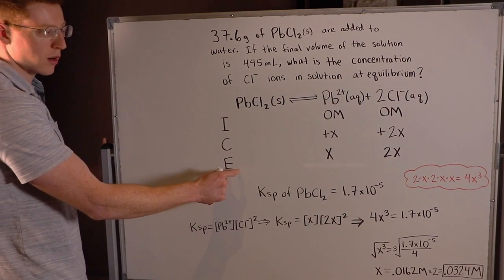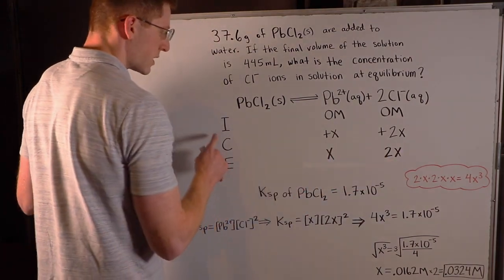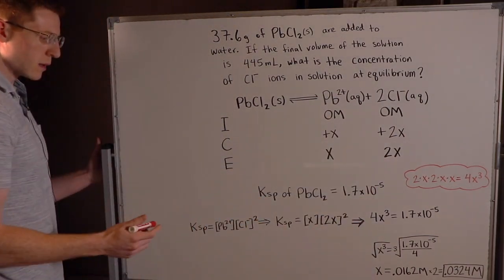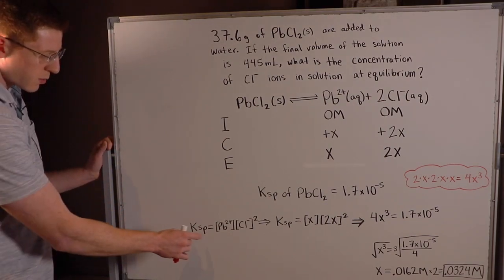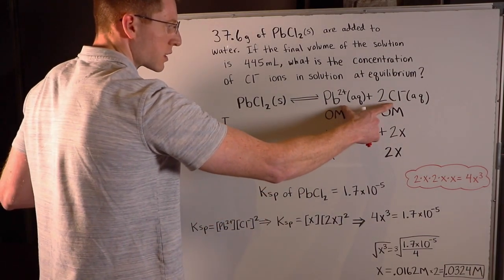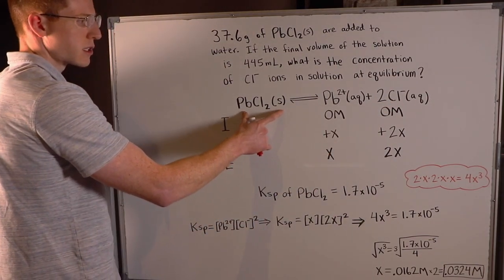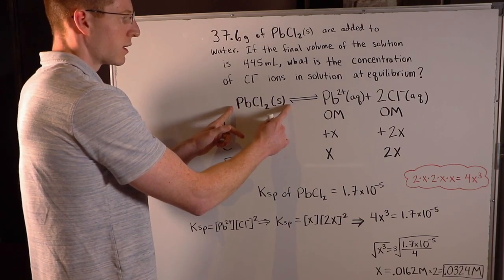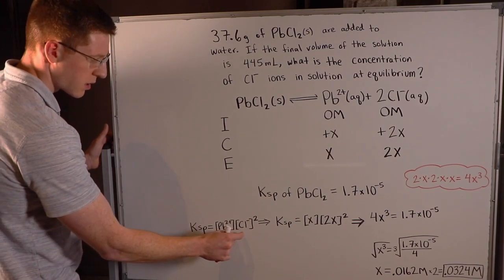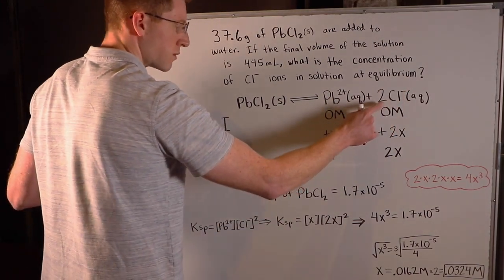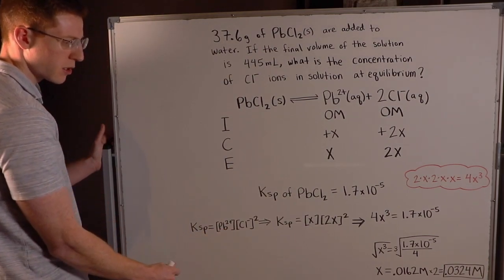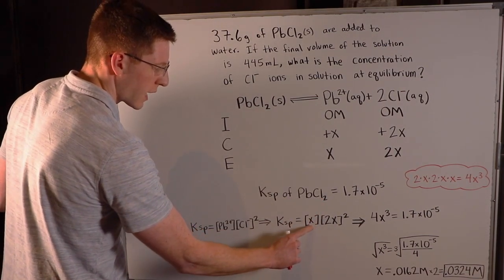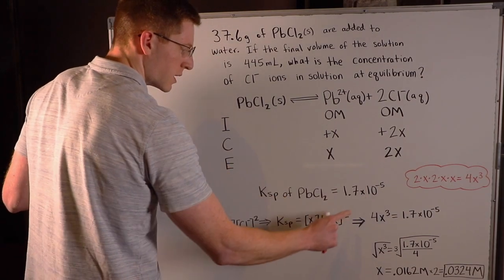To obtain our equilibrium row, we simply add the initial and the change. Zero plus X is X, and zero plus 2X is 2X. Now we're ready to write our KSP expression. KSP equals the concentration of our products over the concentration of our reactants, as with all equilibrium expressions. However, we exclude the pure solid, so it's the concentration of lead times the concentration of chloride squared, over an invisible one. From the ICE table, lead's equilibrium concentration is X and chloride's is 2X.